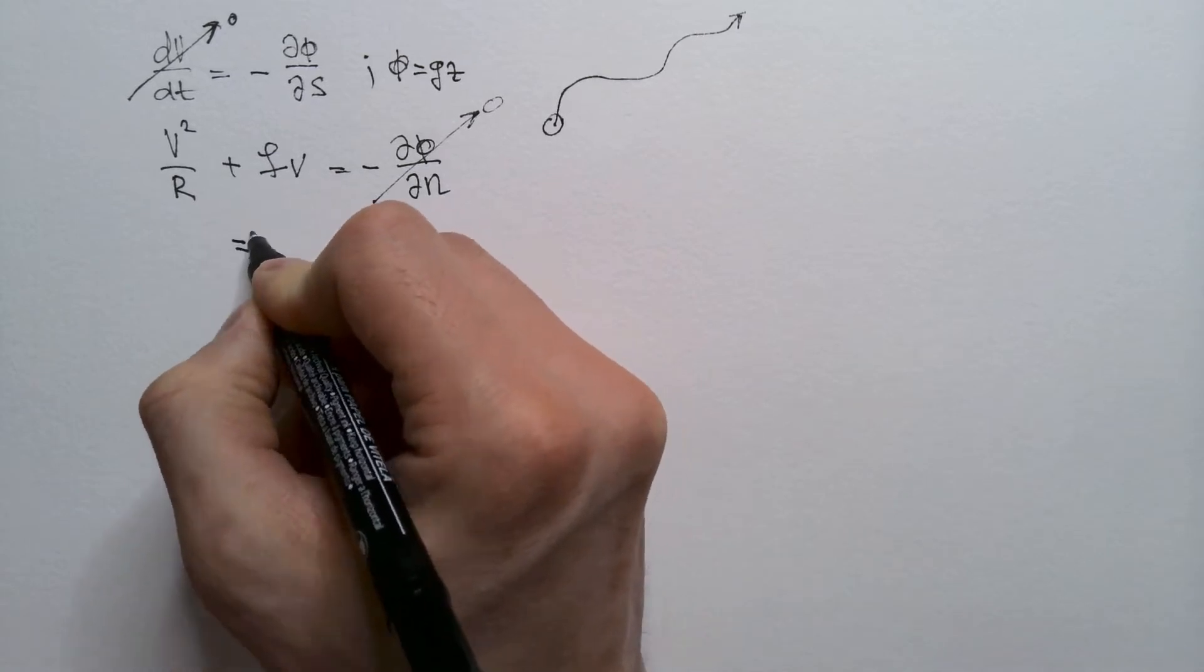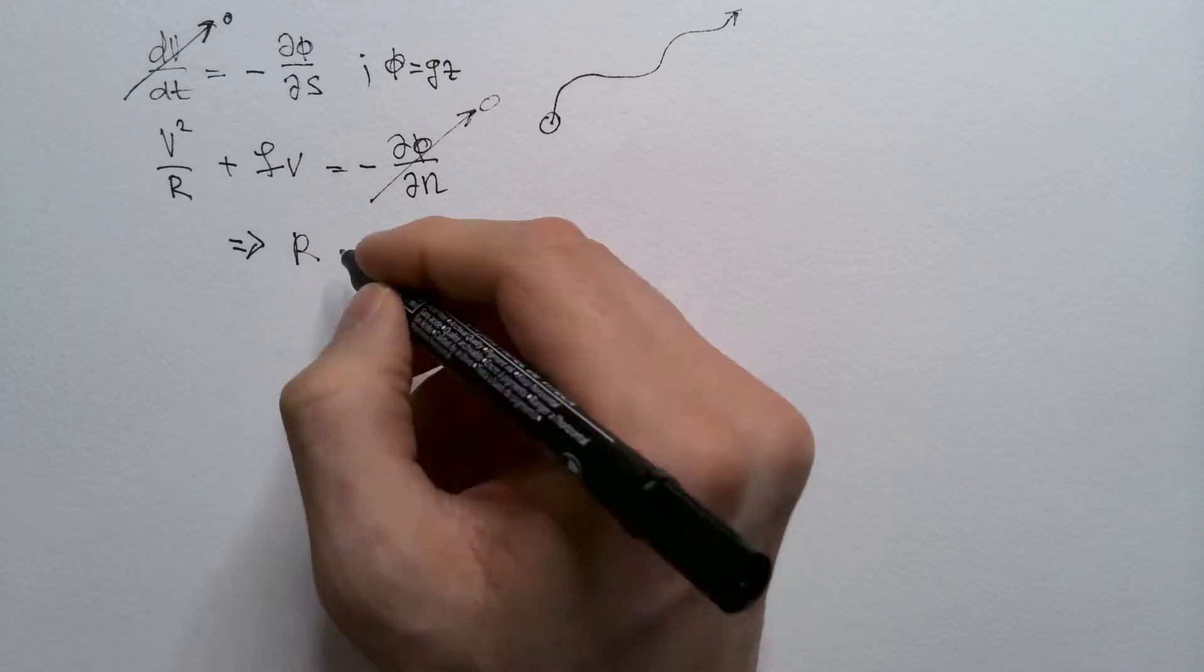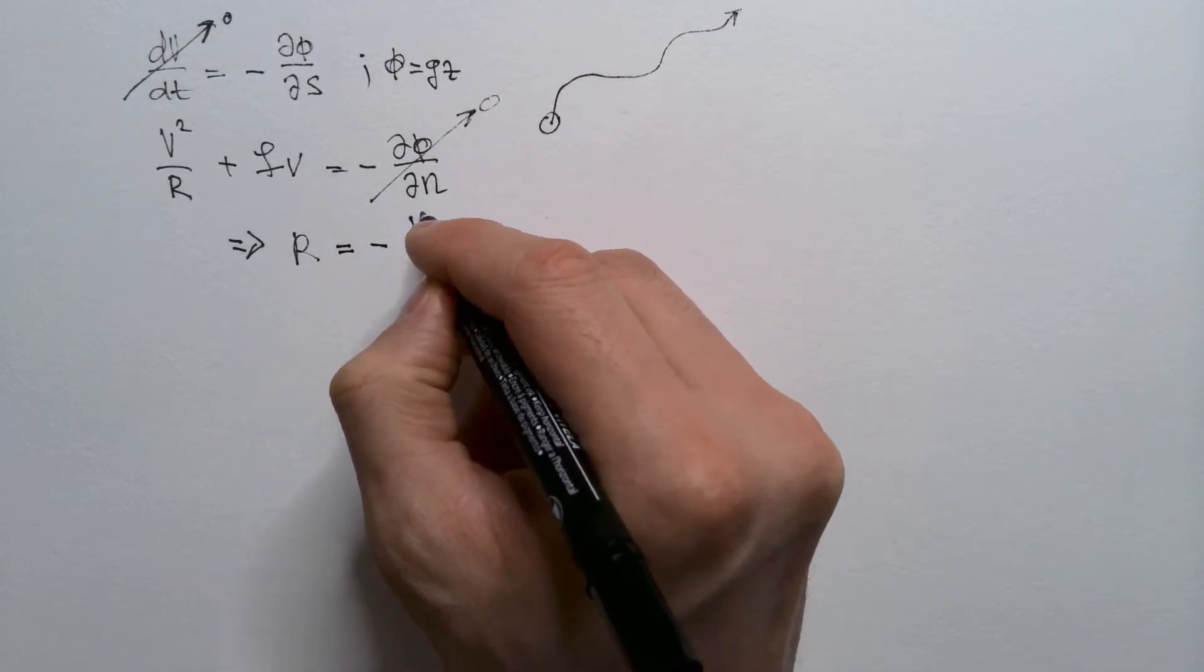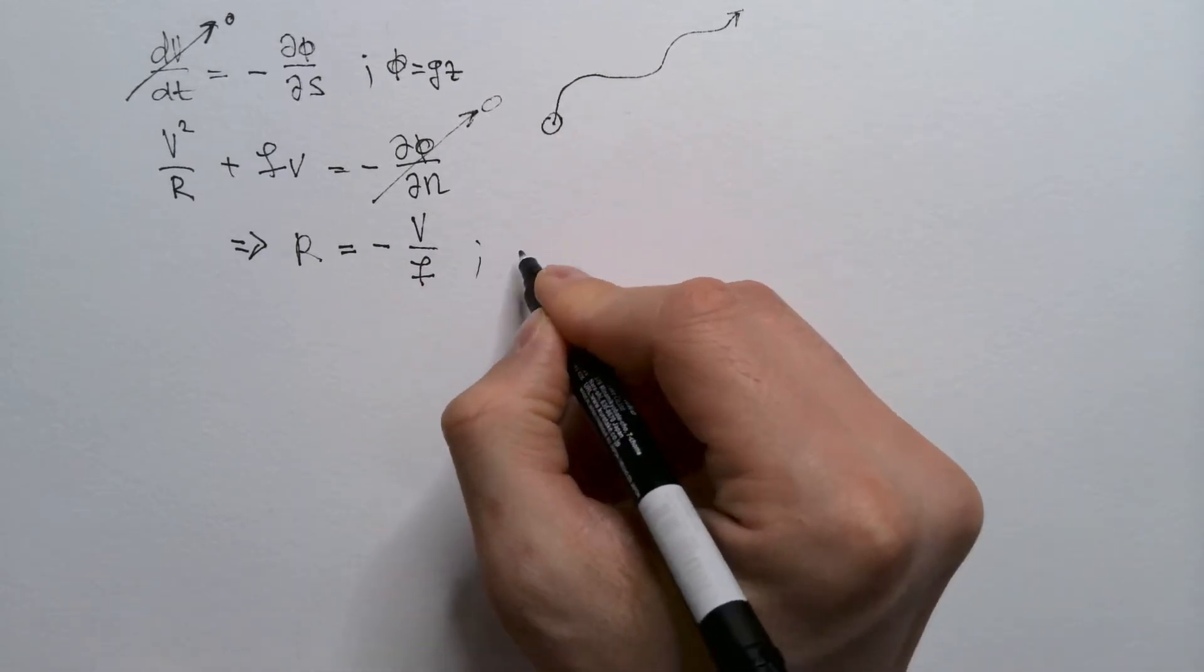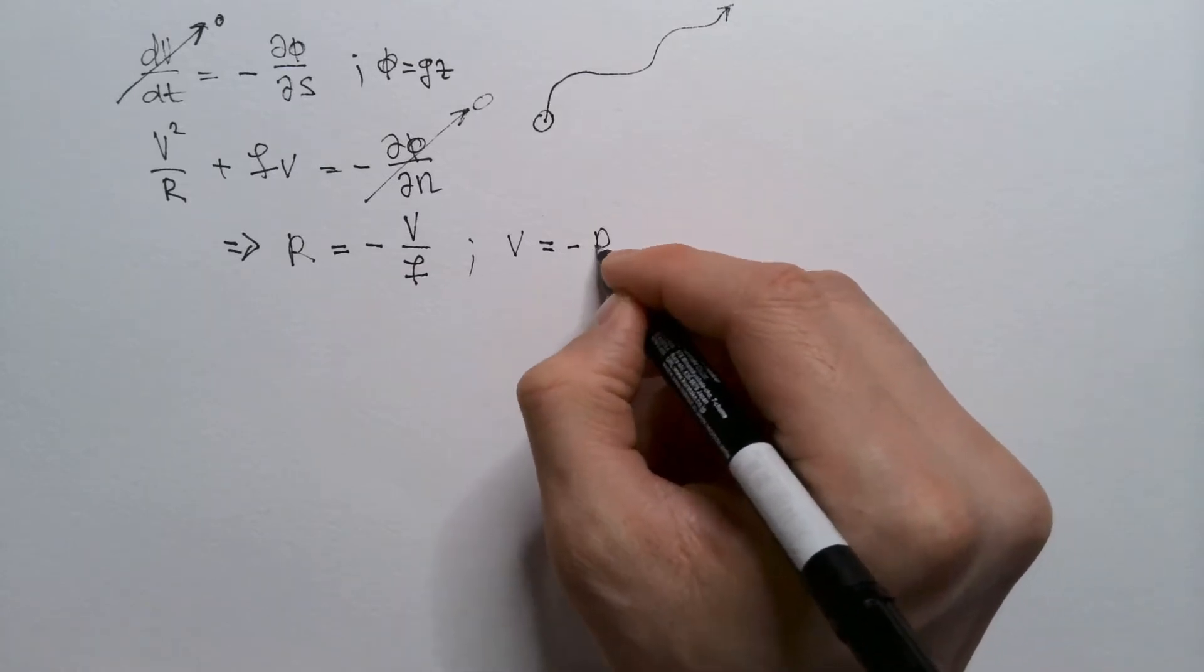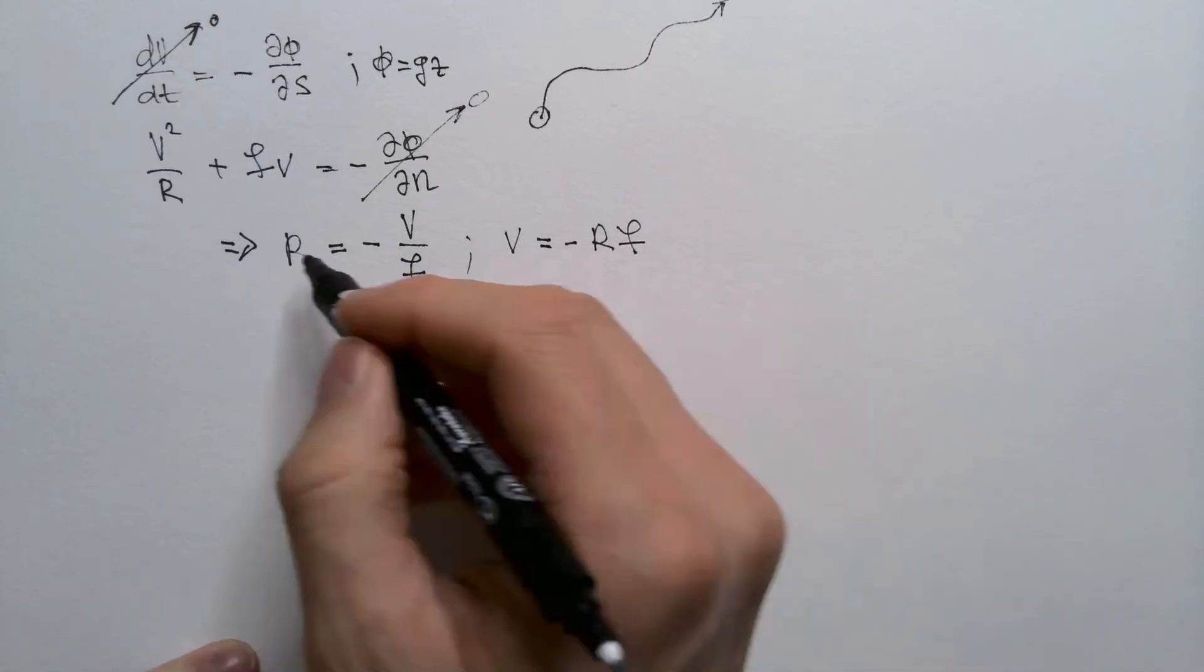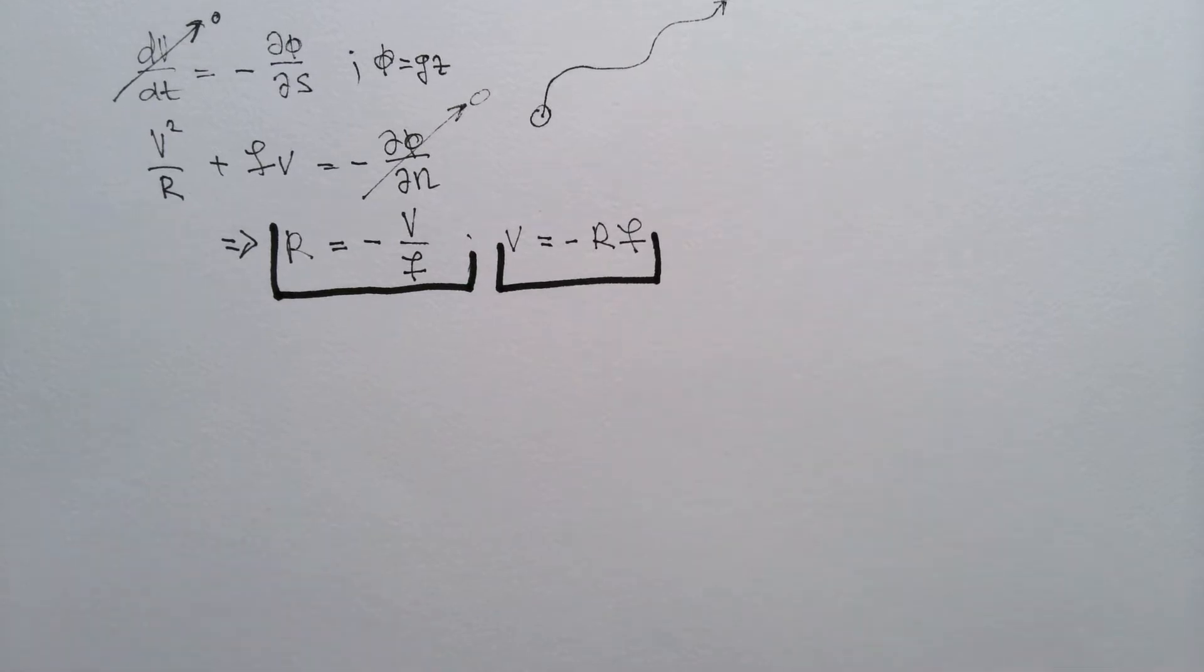So, from this second equation, we can already see that this r, which is radius of curvature of the trajectory, is equal negative v over f. Or, if you want, we can express this in terms of v, and that will be negative rf. And these are really two results that we get for inertial winds or inertial flow.